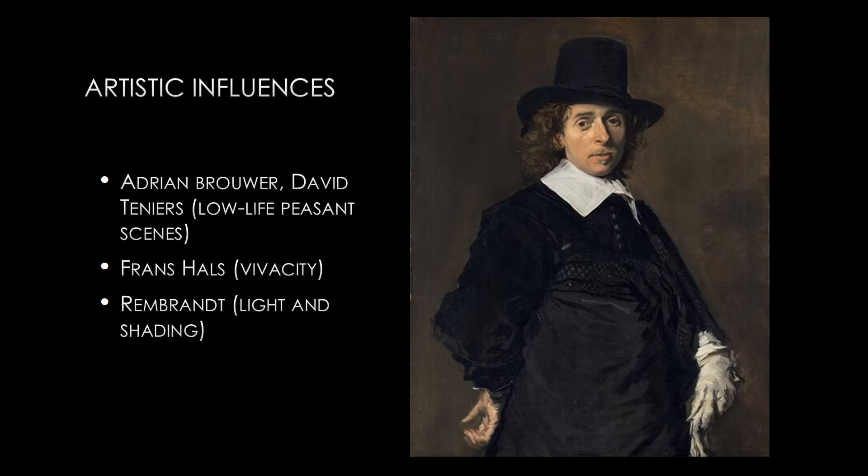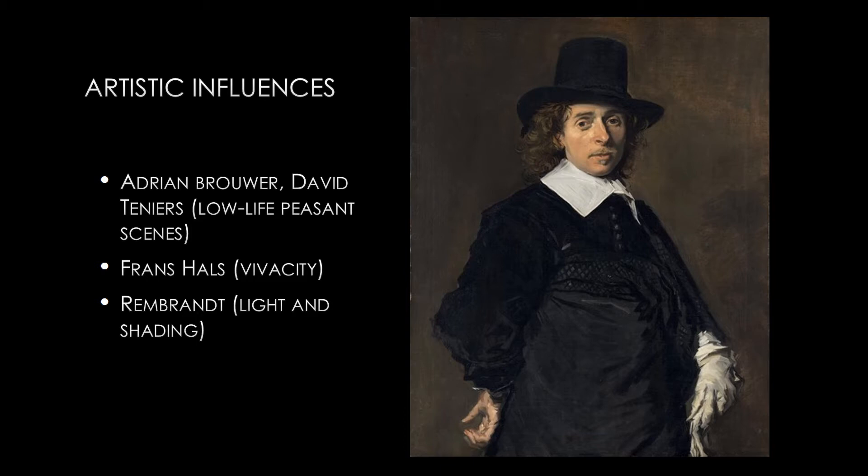There are other artists that influence his work. We're going to see him using a type of subject matter — these low-life peasant scenes — that are very much inspired by what Adrian Brouwer and David Teniers were doing. We're also going to see that he's influenced, especially in light and shading, by Rembrandt. He's most known for his scenes of cottage life, peasant life, and festivals, but he also does some portraits, still lifes, and even some of those head and shoulder studies we call tronies.